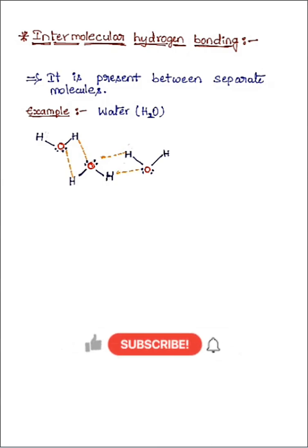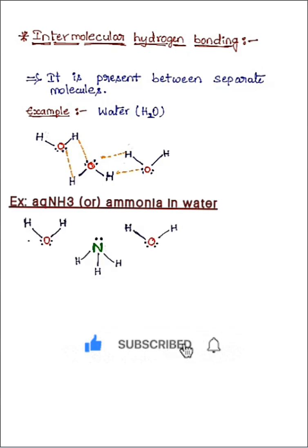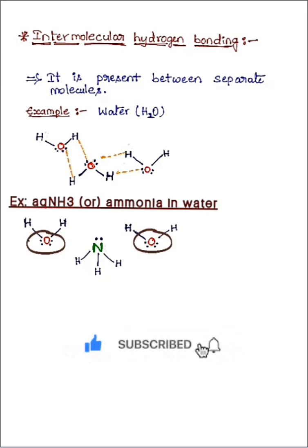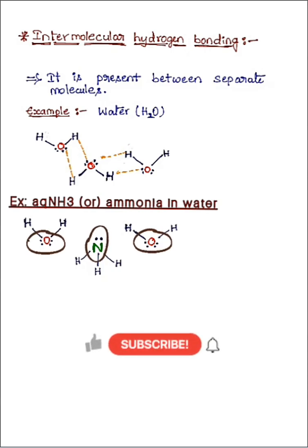Intermolecular hydrogen bonding can also exist between different molecules. Let's take the example of aqueous ammonia — that is, ammonia in water. Ammonia has hydrogen covalently bonded to nitrogen, and nitrogen is electronegative. In water, hydrogen is covalently bonded to oxygen, and oxygen is electronegative. So here we have two types of electronegative atoms: nitrogen in ammonia and oxygen in water.